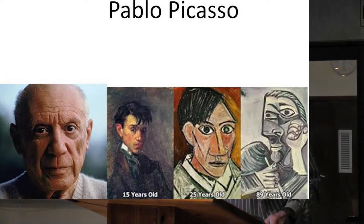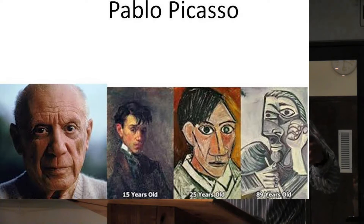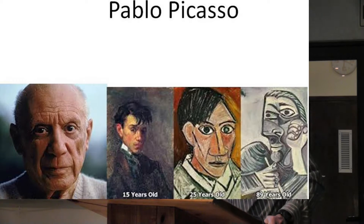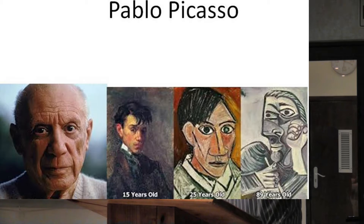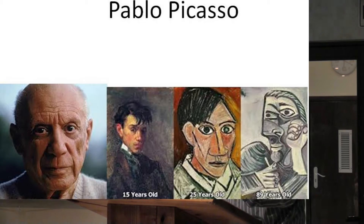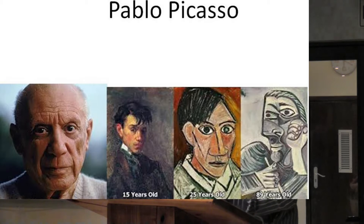Pablo Picasso — this was an amazing man. To show you the changes: here's a picture of him on the left, and on the right, a self-portrait he painted at age 15. You can see he was a good artist. Then he started developing a flatter plane — Cubism. A self-portrait at 25, and then the final one: he was 89 years old when he painted that self-portrait of himself. So things had really changed.